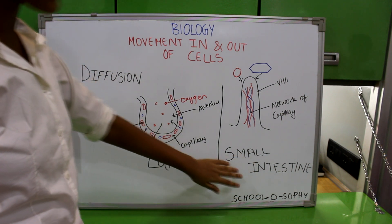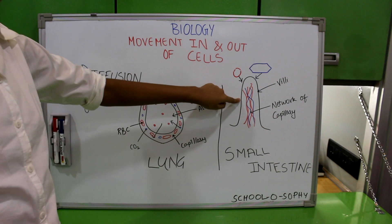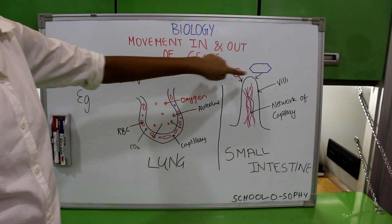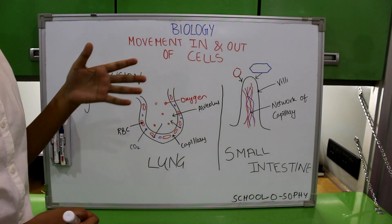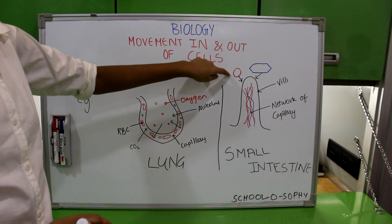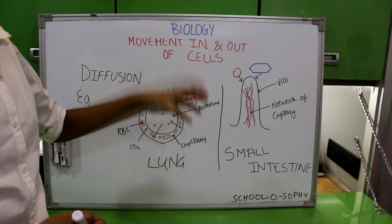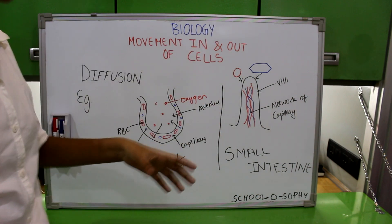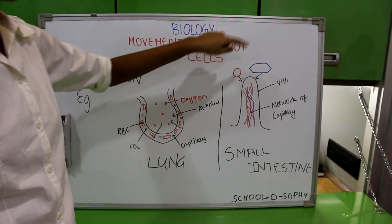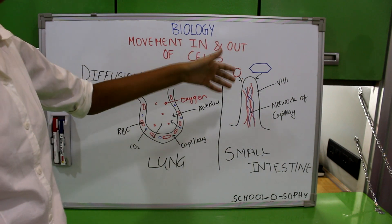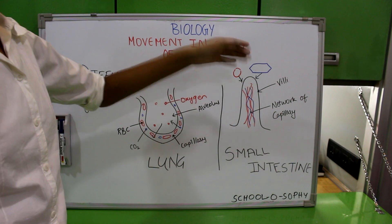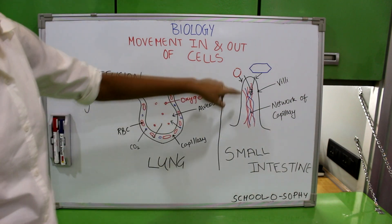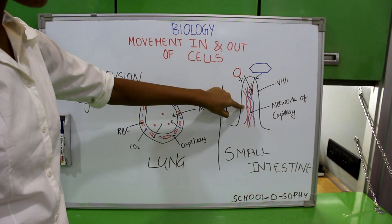The next example is the small intestine. This is a villus — villi line the small intestine, and this is a network of capillaries inside the villus. This is an amino acid and this is a glucose molecule. After digestion is completed, proteins are broken down into amino acids — amino acids are the smallest part of a protein, and a chain of amino acids forms a protein. Glucose is the smallest part of a carbohydrate. The concentration of amino acids and glucose is higher in the lumen of the small intestine than in the blood, so they diffuse from higher concentration into the capillaries — into your blood.